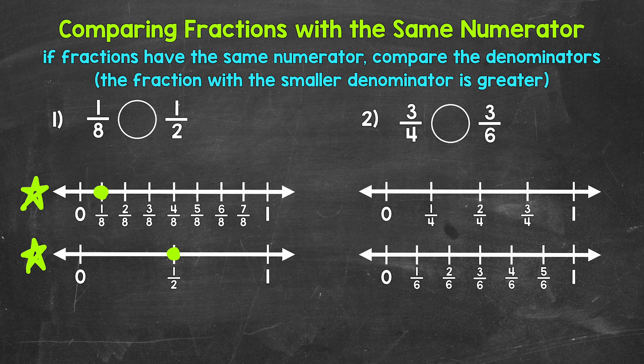We can see that one half is greater. Even though we have the same numerator of one, one half is greater, and that's because of the denominators. When we have the same numerator, we can compare the fractions by looking at the denominators. The fraction with the smaller denominator is greater. That's because the larger a denominator is, the more parts a whole is divided into — therefore, the parts are smaller. The smaller a denominator is, the fewer parts a whole is divided into — therefore, the parts are bigger. So if we have fractions with the same numerator, the fraction with the smaller denominator is greater. Those equal parts of the whole are bigger, so we have more of the whole — a greater portion of the whole.